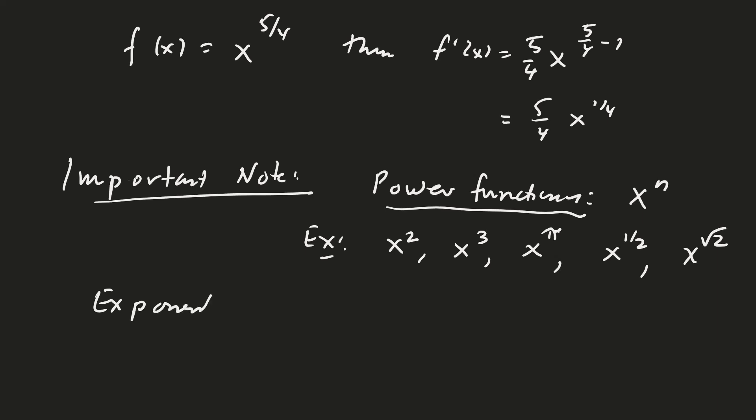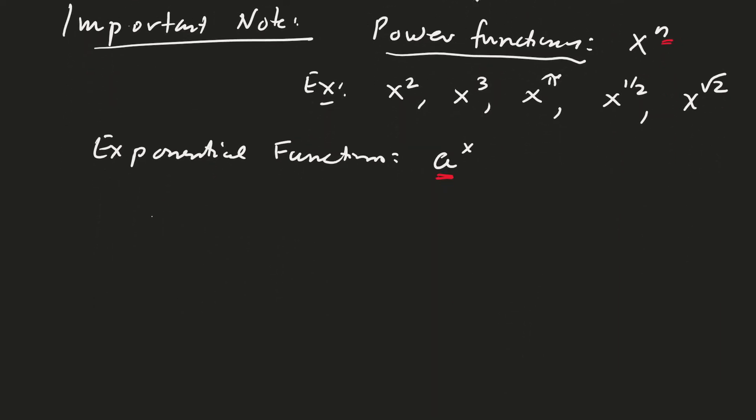Exponential functions are of the form aˣ. Notice that the constant is in the base, while for power functions the constant is in the exponent. Examples of exponential functions include 2ˣ, 3ˣ, eˣ, or πˣ. These functions we want to treat differently than power functions.